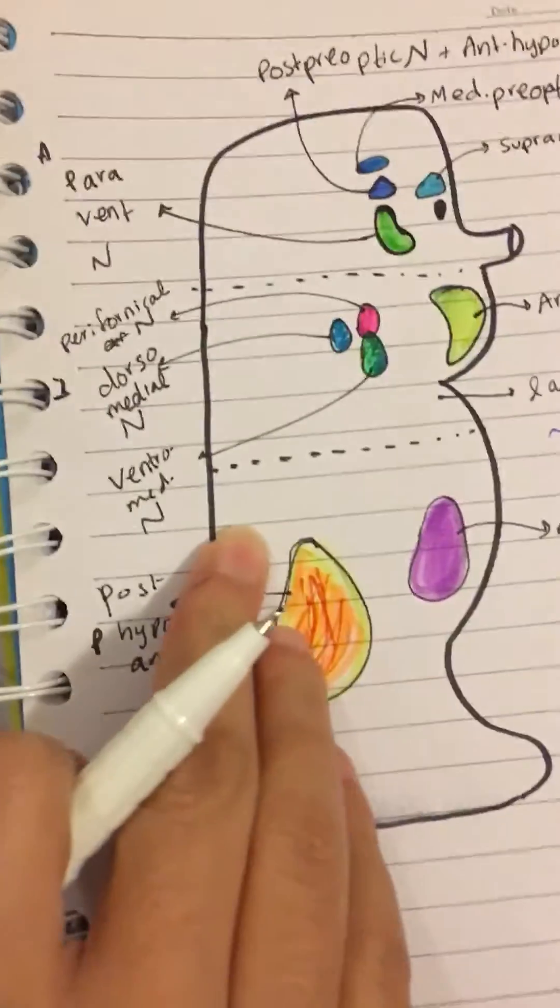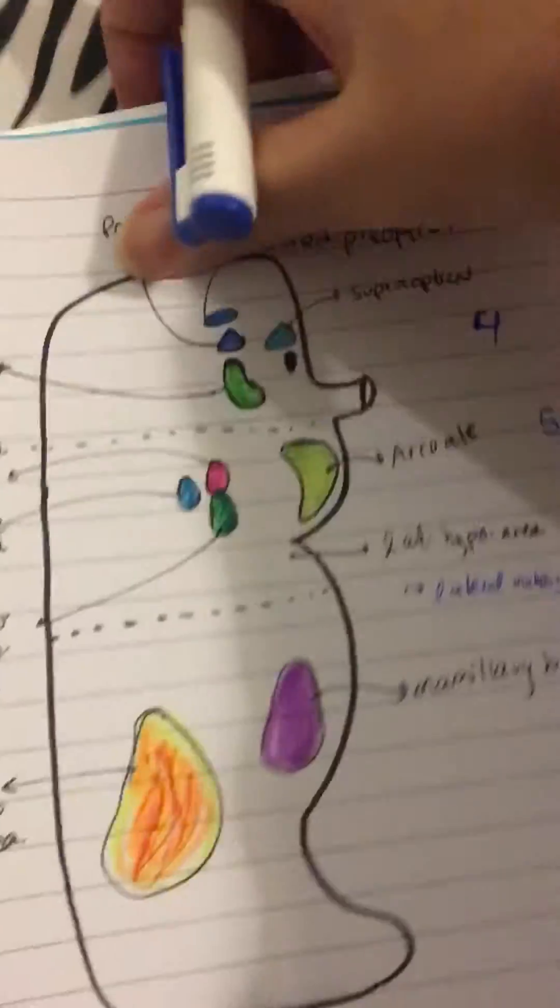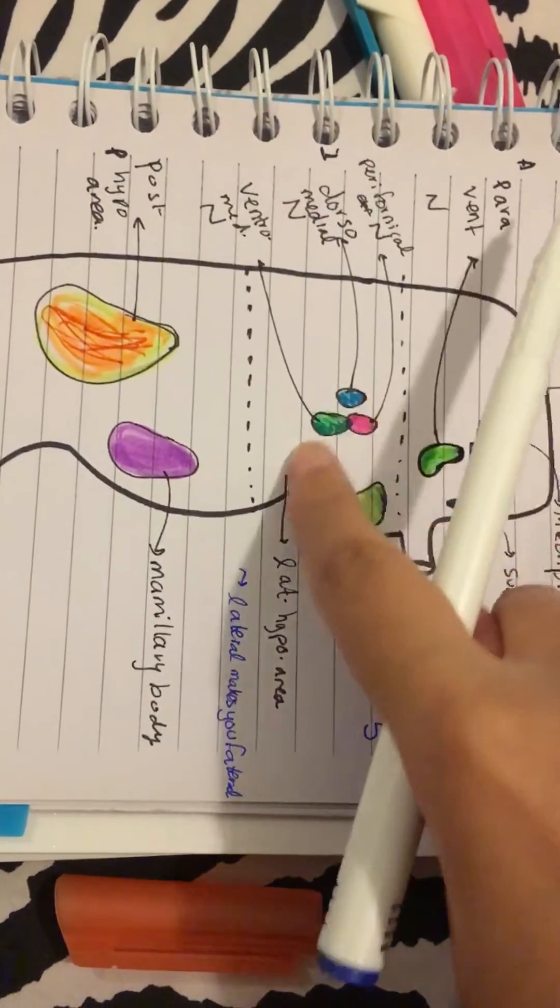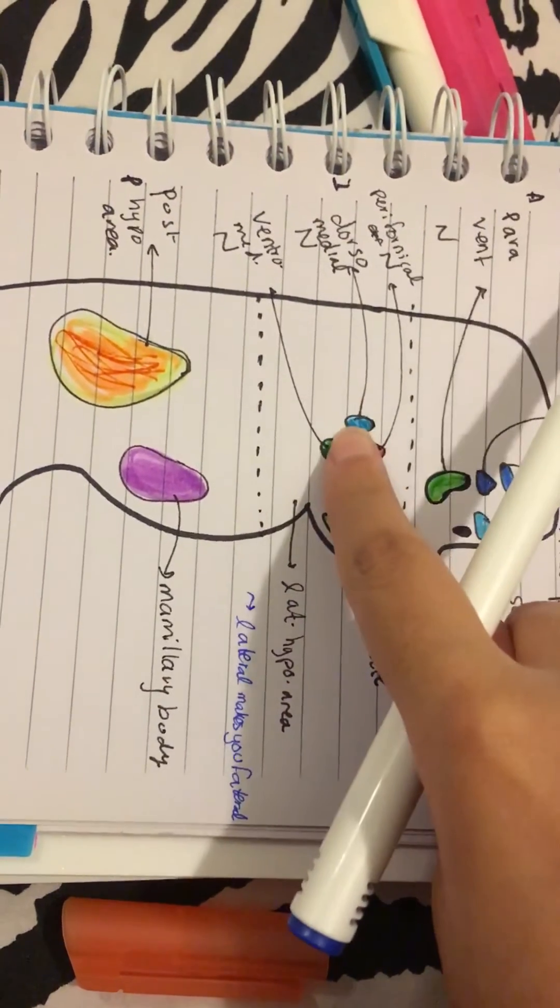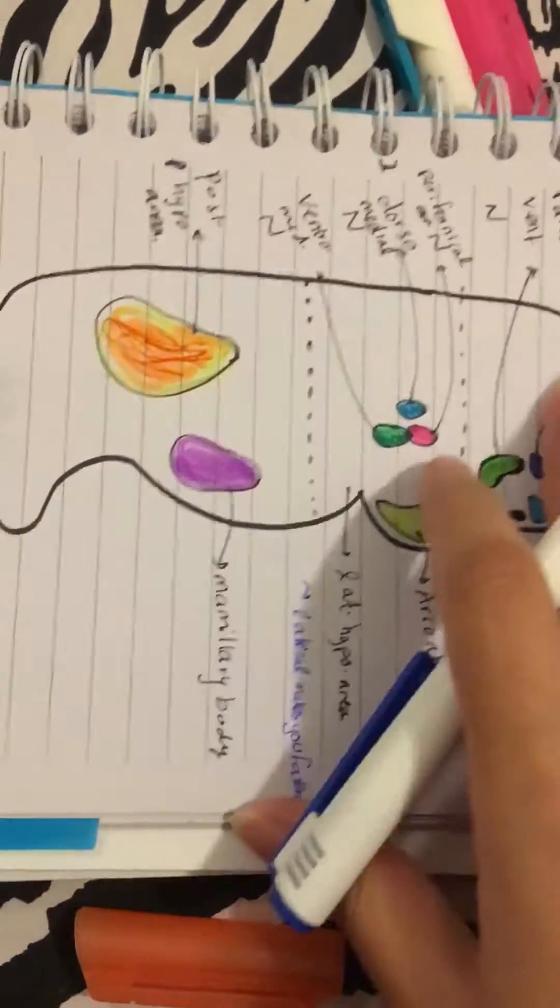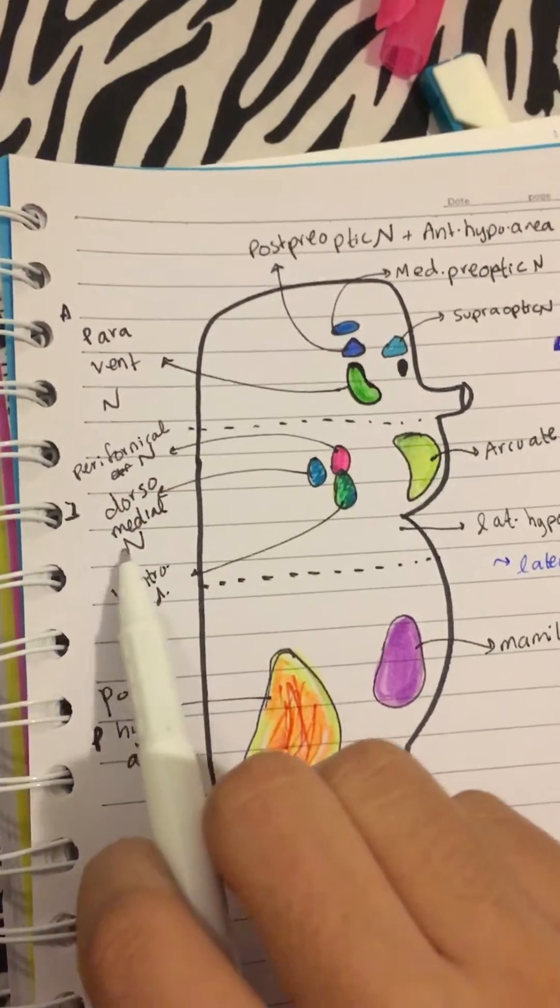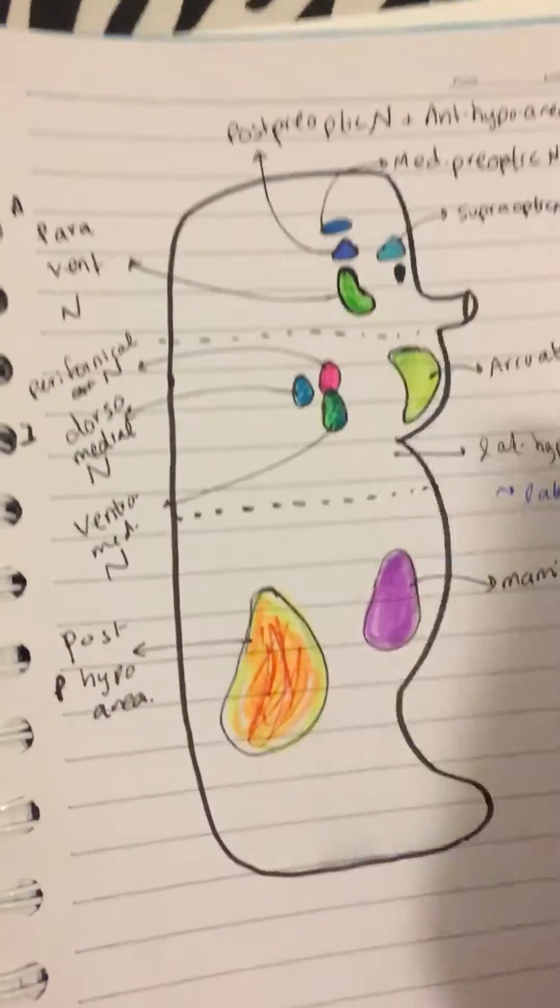And your dorsal medial, you can remember this, because the dorsal fin of fish is on the top of their bodies and fish swim on their tummies. So your dorsal medial nucleus is for your GI stimulation.